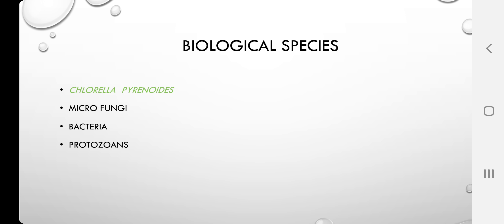Examples of microbial organisms helpful for digesting organic waste and pollutants present in sewage water include Chlorella pyrenoidosa, micro fungi, bacterial species, and protozoans. The key concept of this video is the significance of microbial agents that naturally clean up sewage and untreated water. We should understand the importance of such microbial species for our own survival.